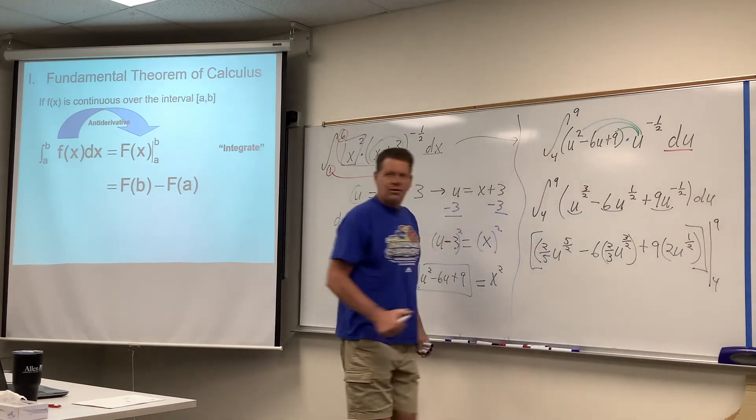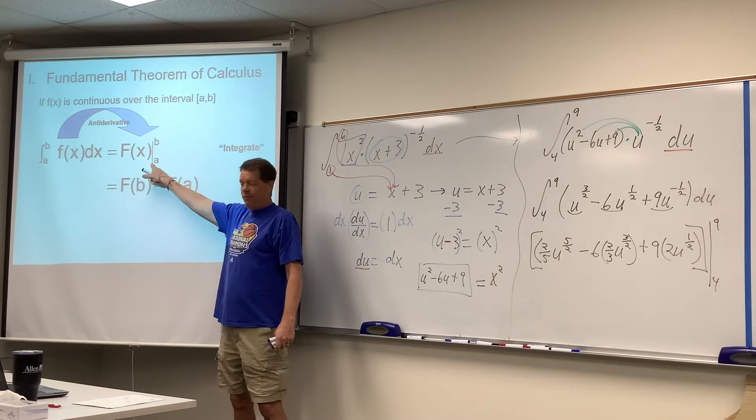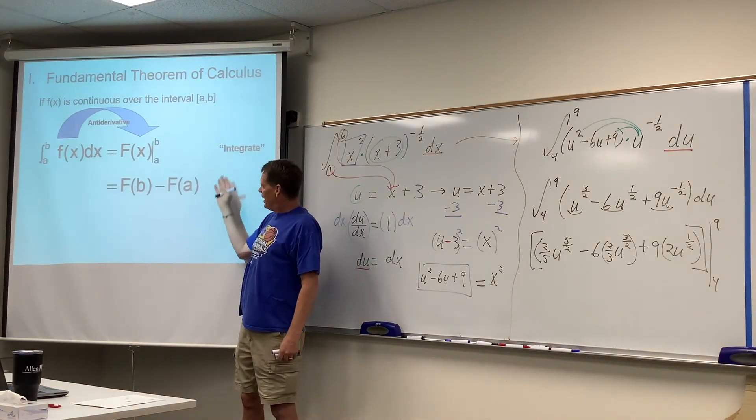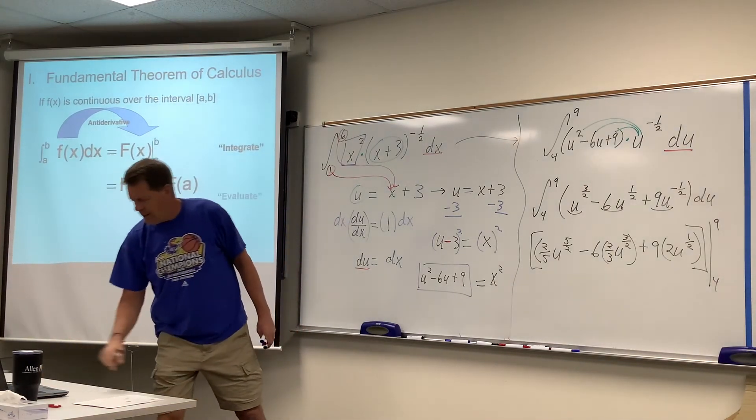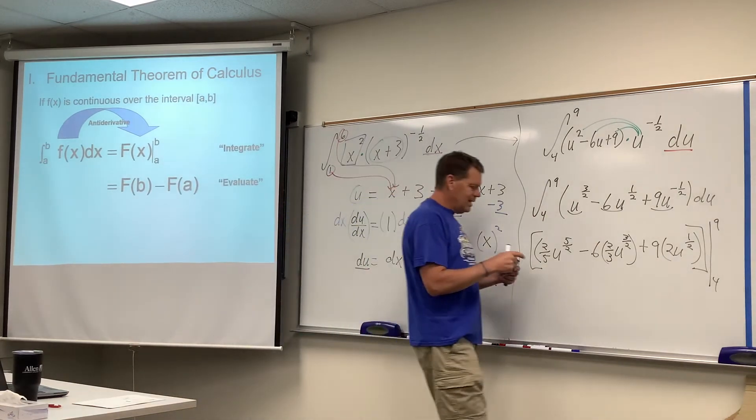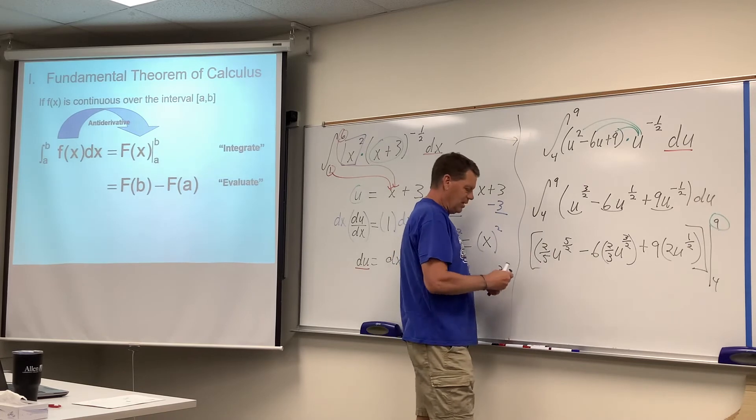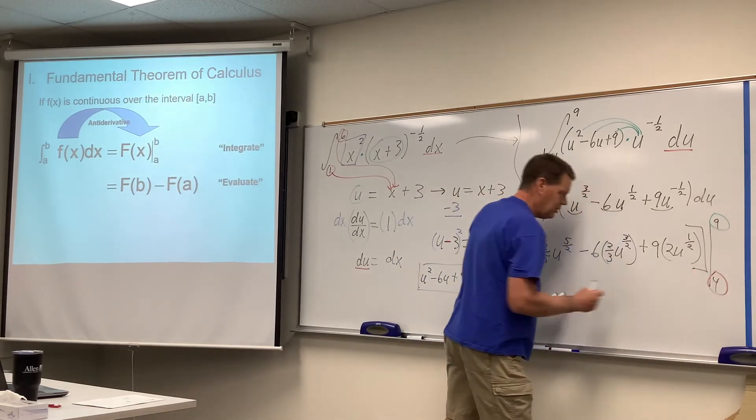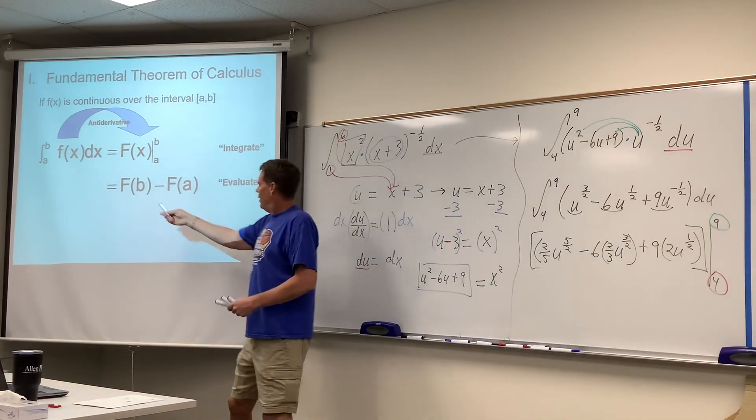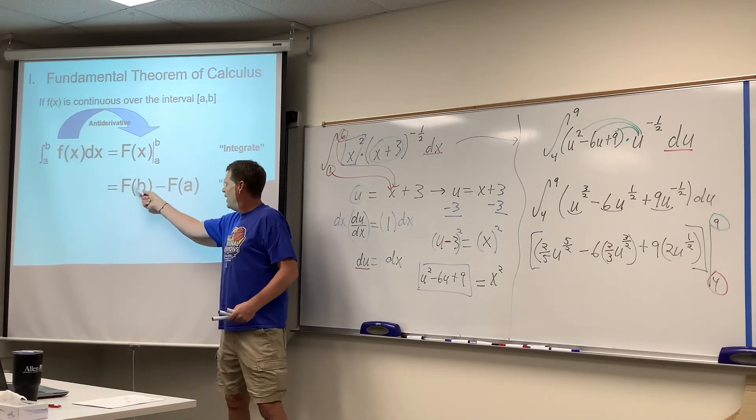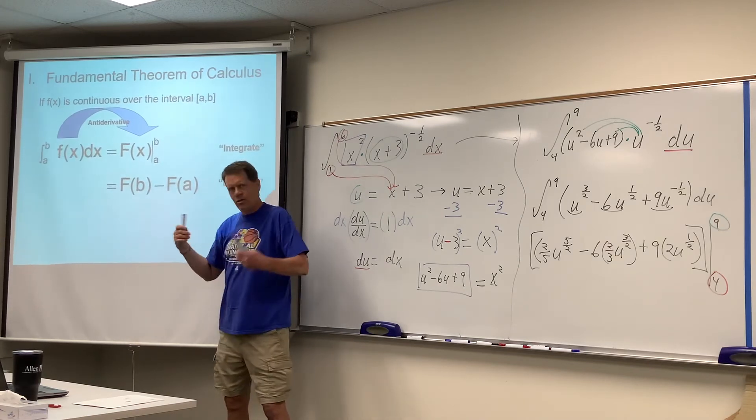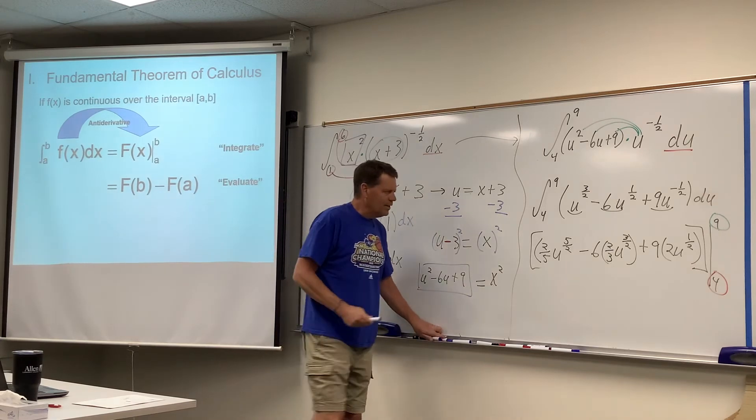From 4 to 9. So this will be that step we talked about on the fundamental theorem of calculus, and then the next step of course is to evaluate, whereby we stick the 9 in here for all those u's, and then we'll stick the 4 in for all the u's. Stick the 9 in, crunch it out, stick the 4 in, crunch it out, and subtract the two. That's arithmetic.